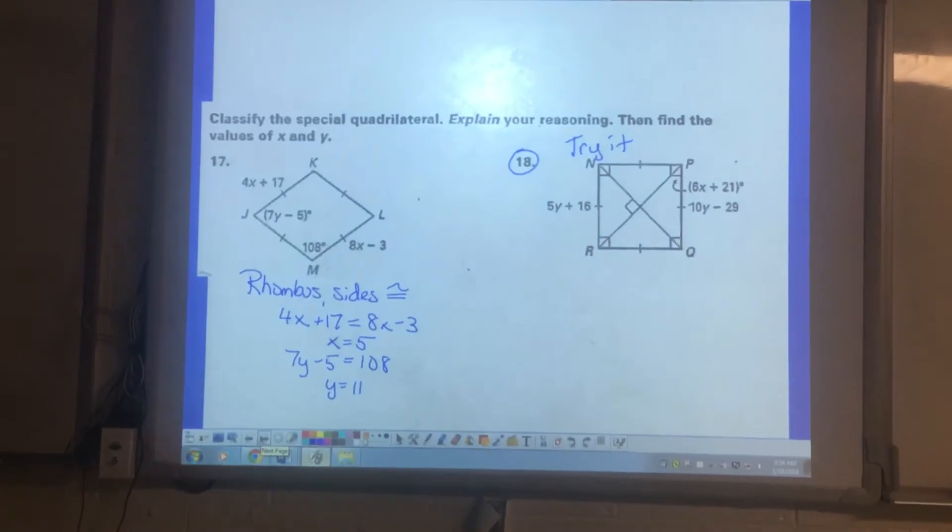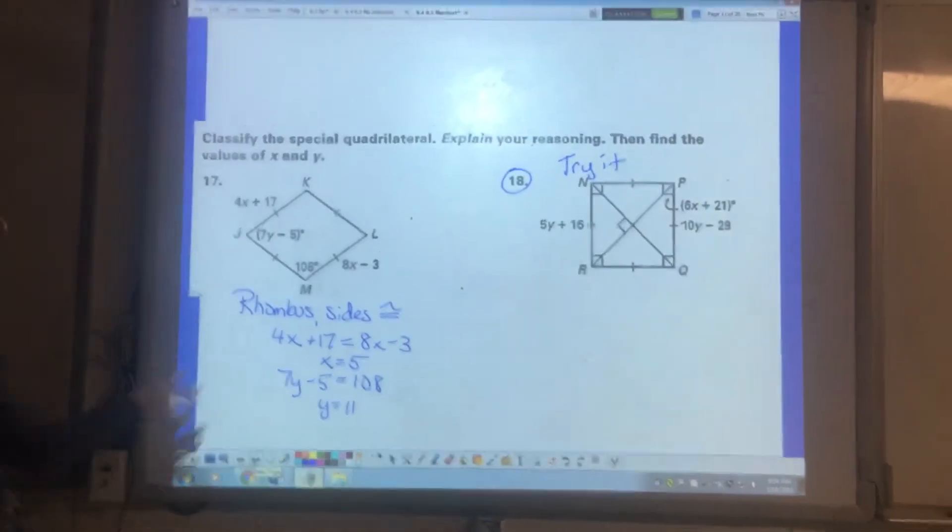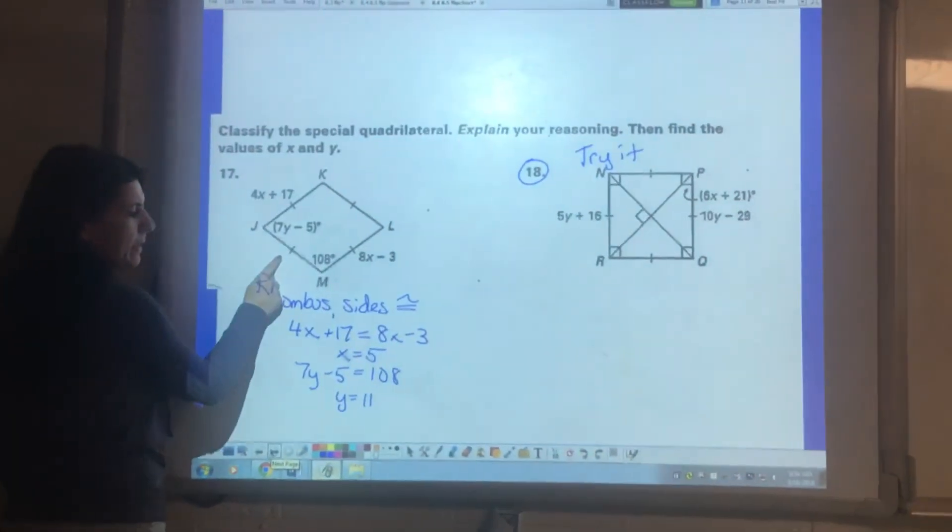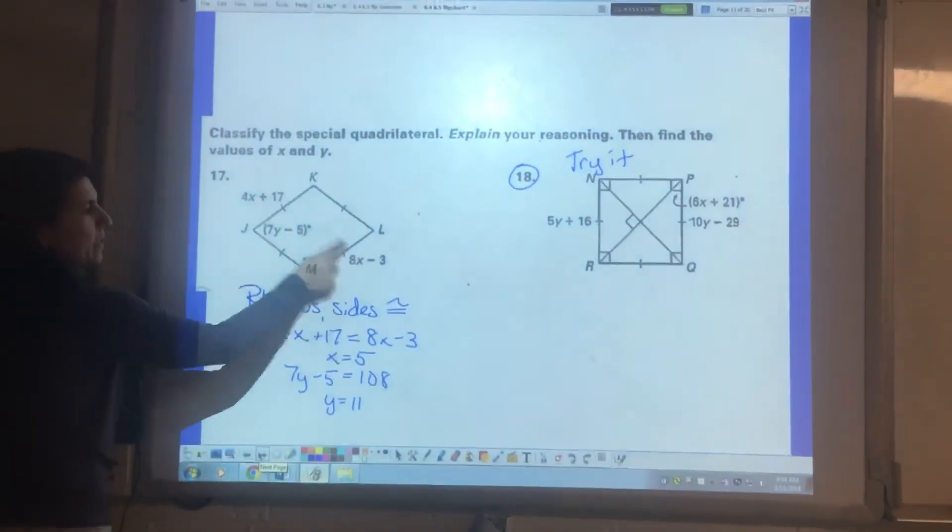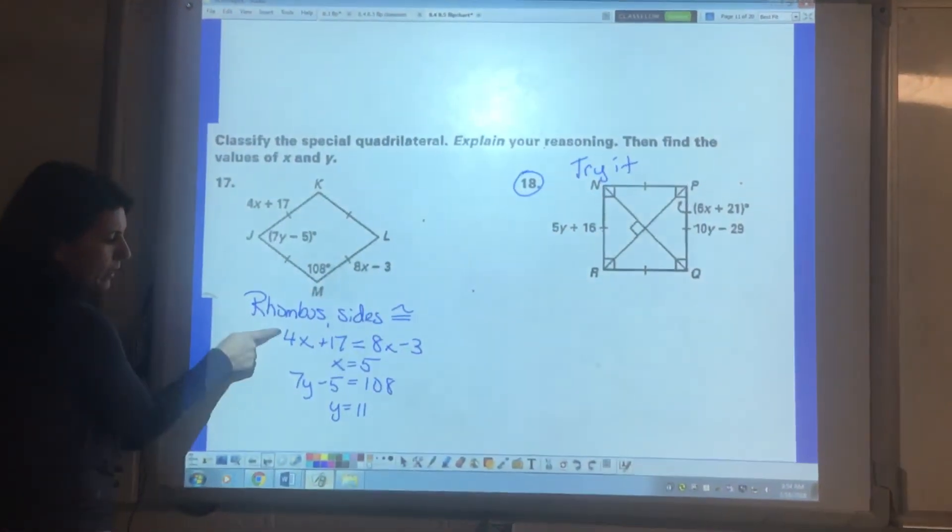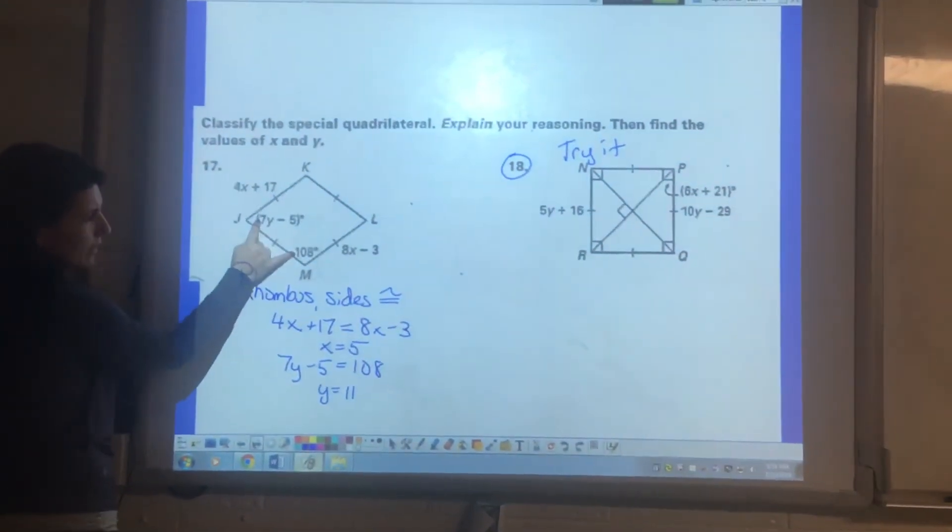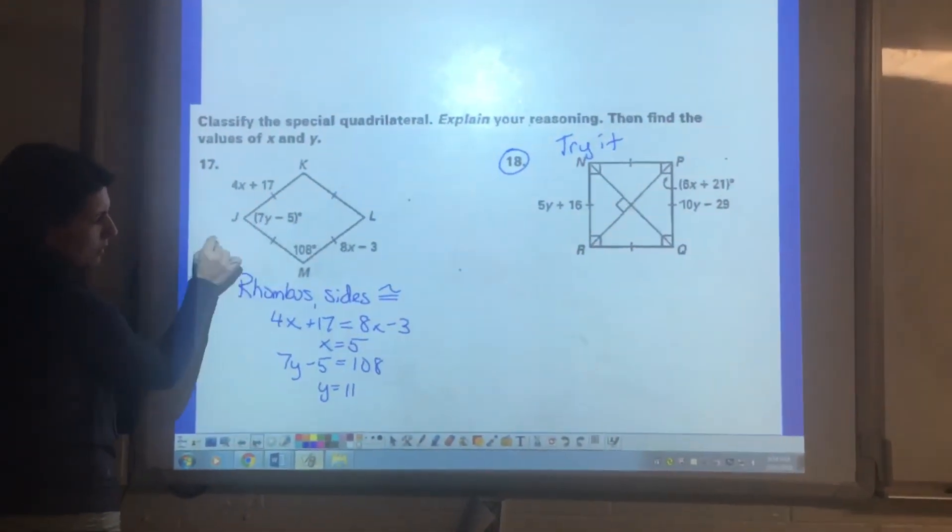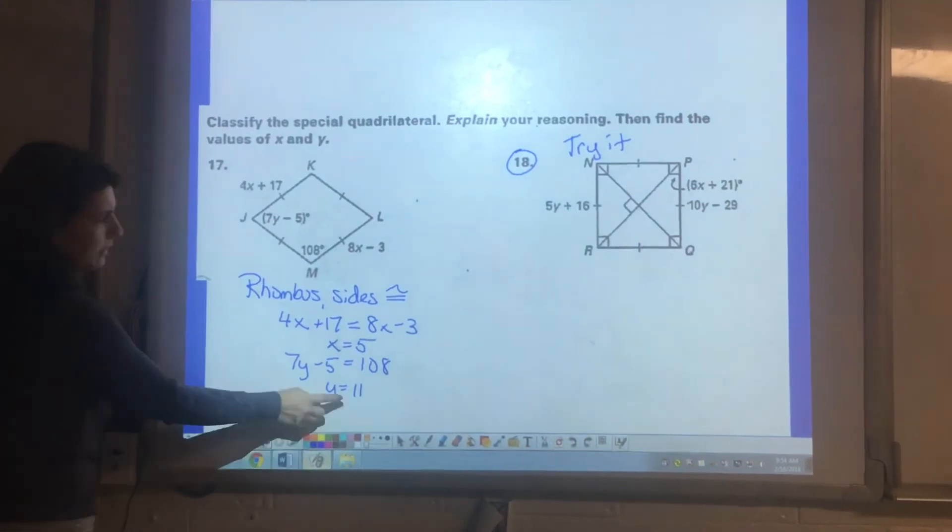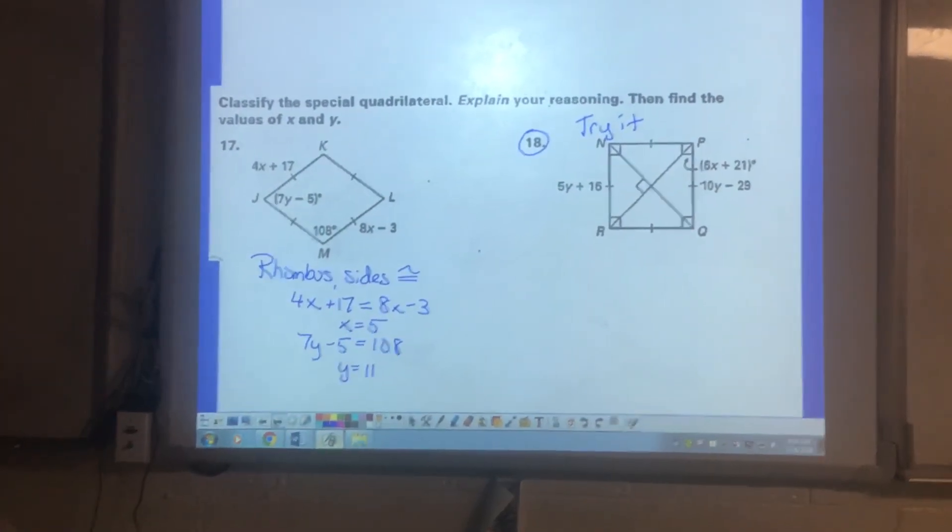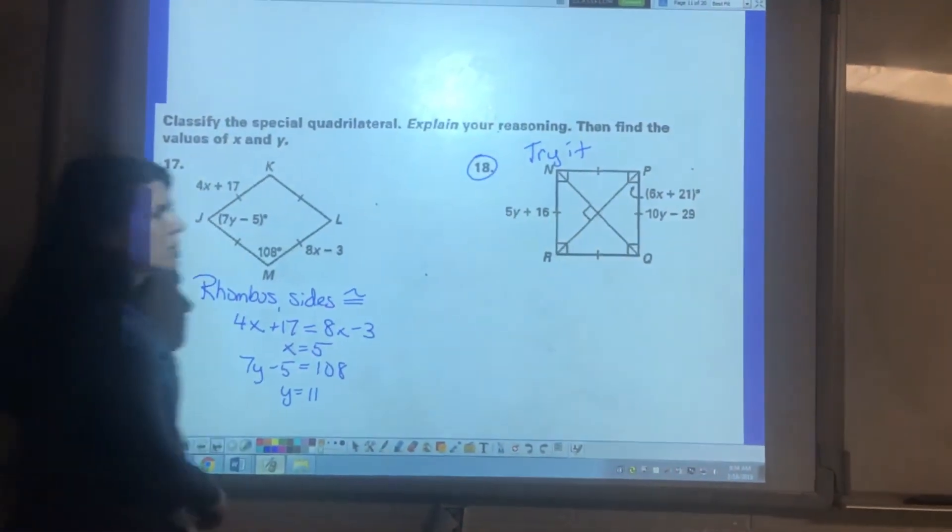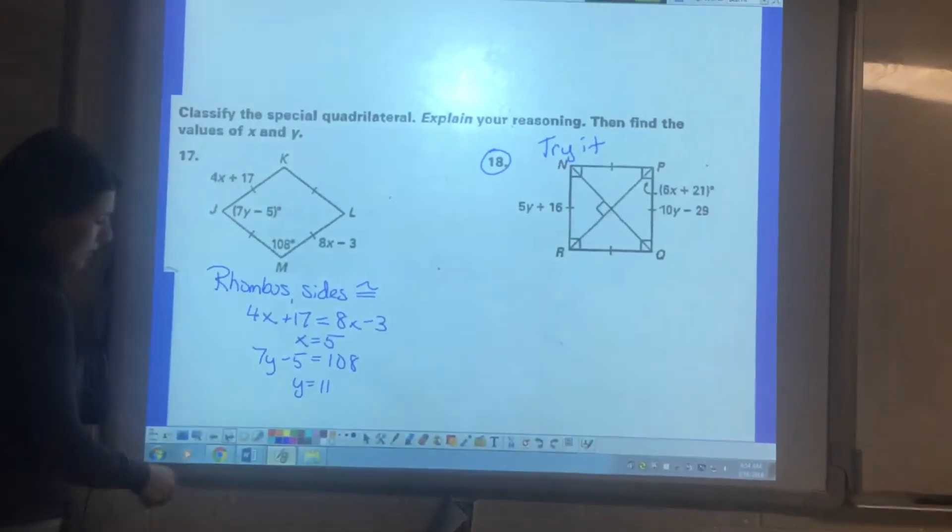Classify the quadrilateral and then find the values of X and Y. This is a rhombus. We have four congruent sides which tells me that I can set these two equal to each other. When I do that and solve it I get X is five. These two are also going to be set equal to each other. And when I do that I end up with Y equals 11. 18 try that one. That one's obviously a square. That one should be pretty easy for you to do.